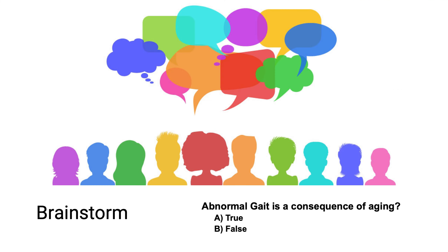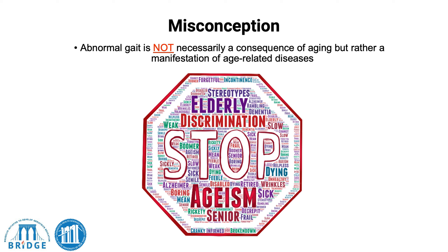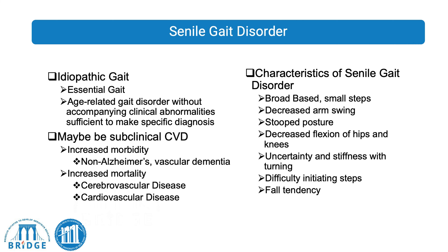Sometimes abnormal gait is described as simply appearing abnormal. Consider this question: abnormal gait is a consequence of aging — true or false? The answer is false. This is a misconception, and it's good to be mindful of ageism, meaning not generalizing or stereotyping based on age. Abnormal gait is not necessarily a consequence of aging, but rather a manifestation of age-related diseases.